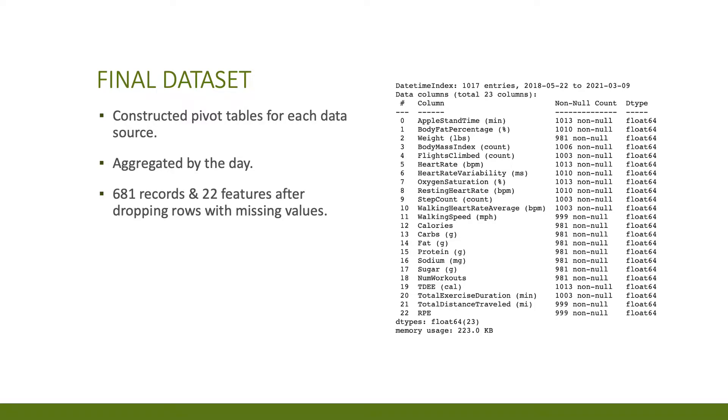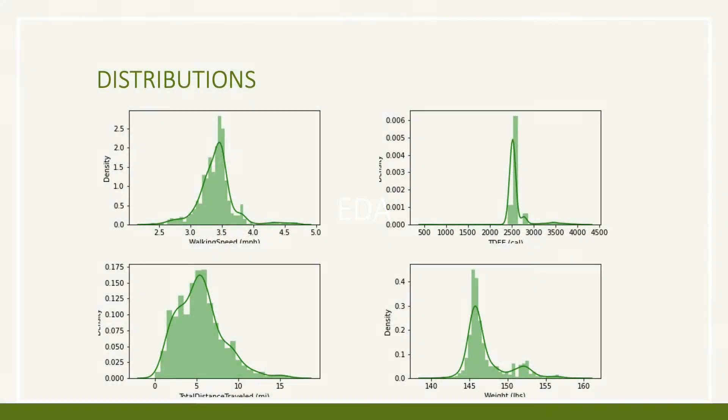The final data set that I constructed was aggregated by each day and resulted in 681 records and 22 features. When analyzing the data, I first wanted to get an overview of the features' distributions and relationships between variables. Here are some of the distributions. Most of them seem normally distributed, but others seem bimodal or skewed. As we will see when constructing models, these could play a role when performing diagnostics.